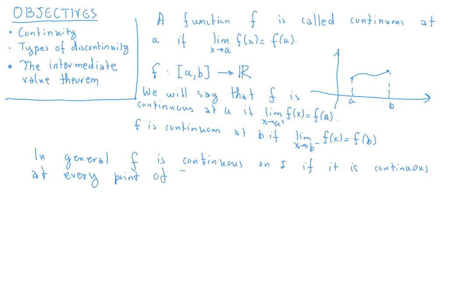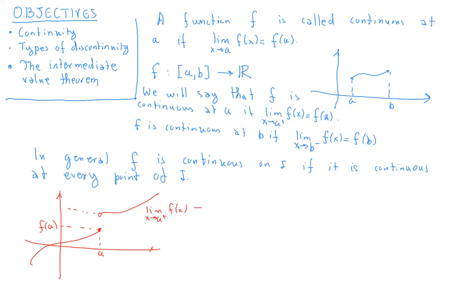To understand better the notion of continuity, we can ask ourselves what it means for a function not to be continuous. The term we use here is discontinuous. Imagine a point a where f of a is at one location, but the limit as x tends to a from the right of f of x is different from the limit as x tends to a from the left. This is called jump discontinuity — when the one-sided limits exist but are different from each other.